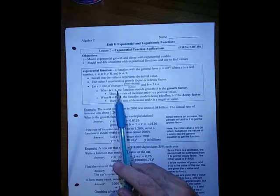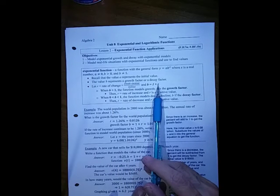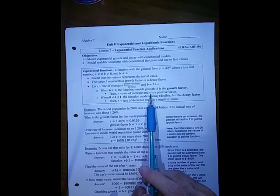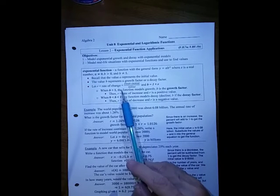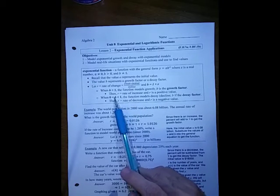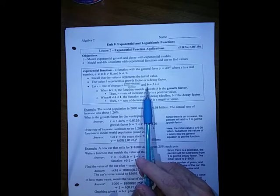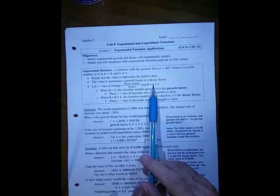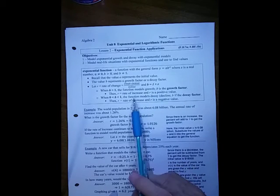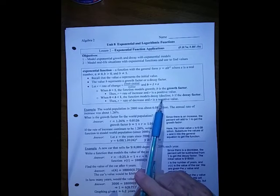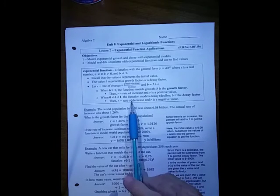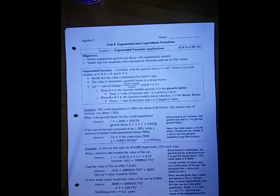If b is bigger than 1, r has to be a positive number, which is the rate of increase, and b is the growth factor. If it's between 0 and 1, this has to be a decay factor, meaning I had to subtract something from the 1. So r was the rate of decrease, and r is a negative value. This would say a percent decrease, or it's declining, and then b is called the decay factor.